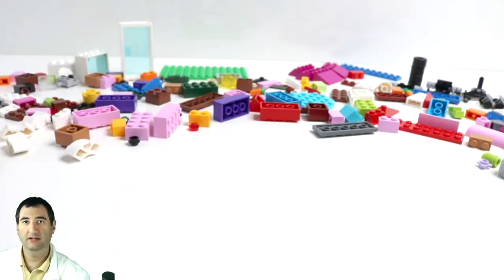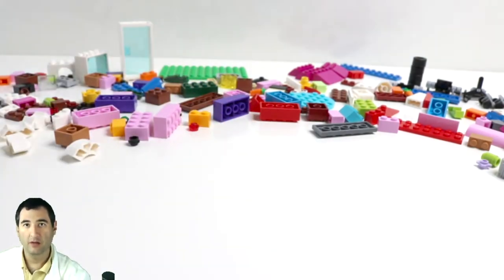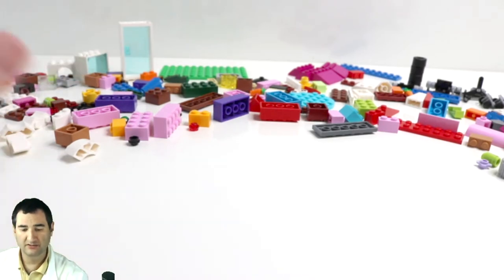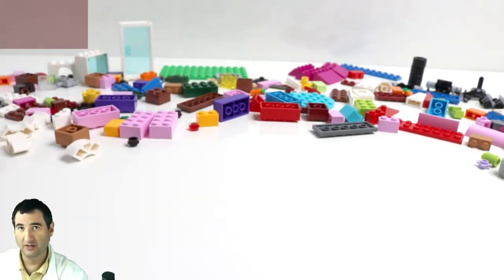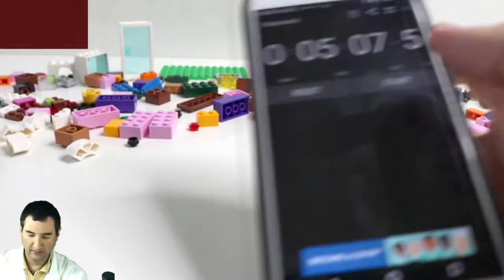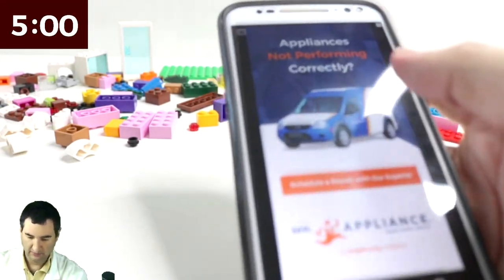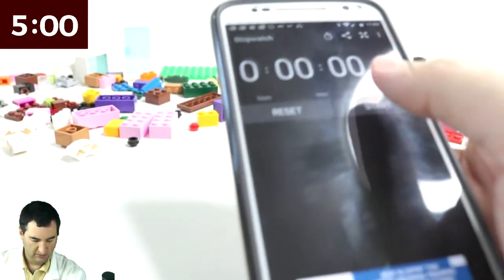Next we're going to do a Fortnite Llama. We're going to build it out of Legos, 5 minutes, 221 pieces. I have the right color schemes for the Llama so I'm hoping it's going to turn out well. Let's reset the clock and hit start.